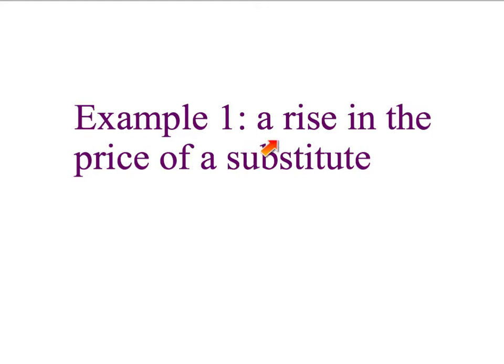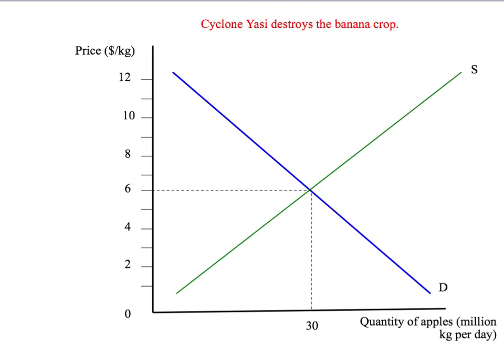Our first example is going to be a rise in the price of a substitute. Back in the mid-2000s, Cyclone Yasi destroyed the banana crop in northern Queensland. What did that do? Well, that had the effect of shifting the supply curve for bananas to the left. It pushed up the price of bananas. You should be able to show this on a diagram, by the way. And if you're not sure, stop this presentation right now and have a shot.